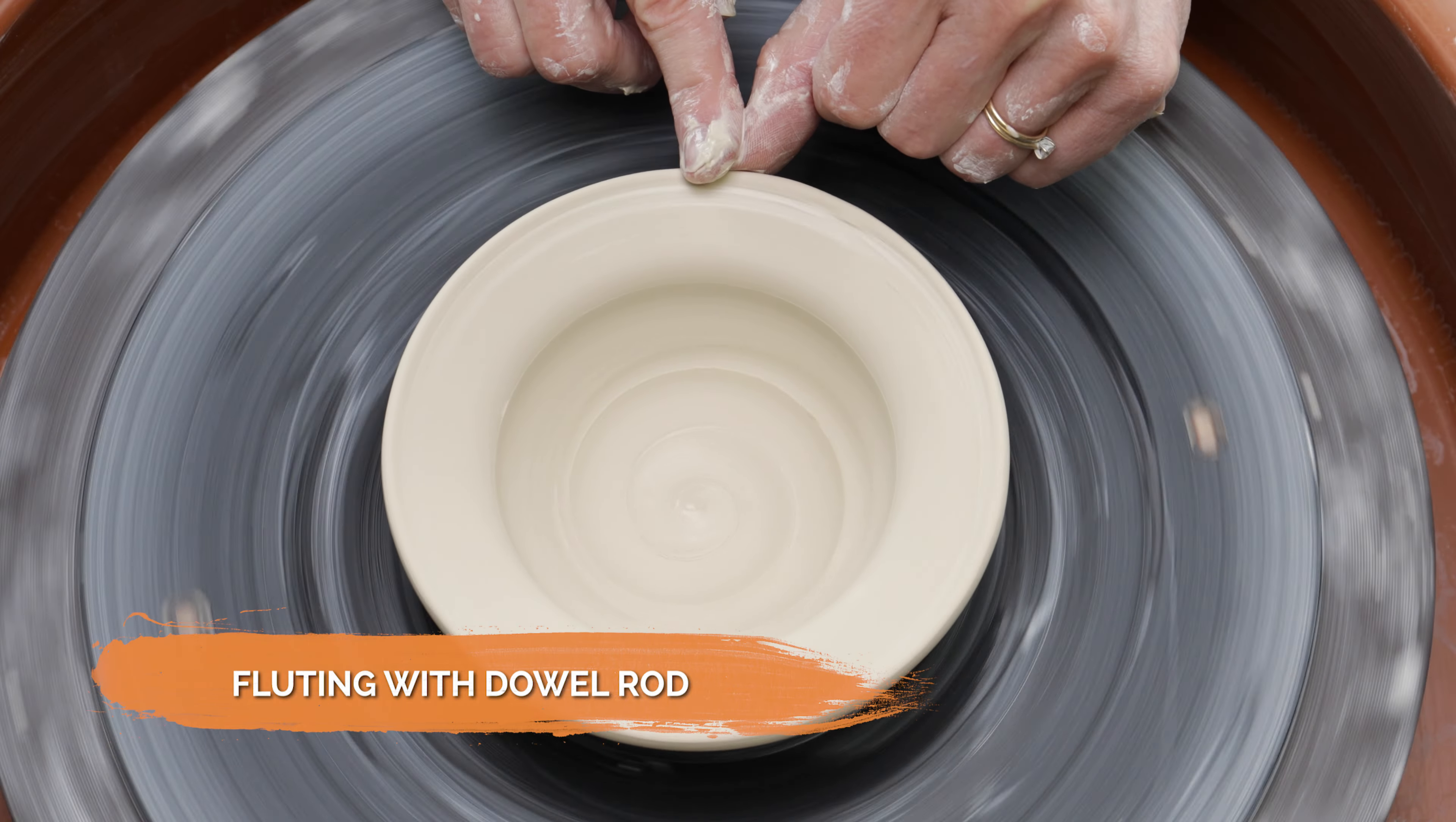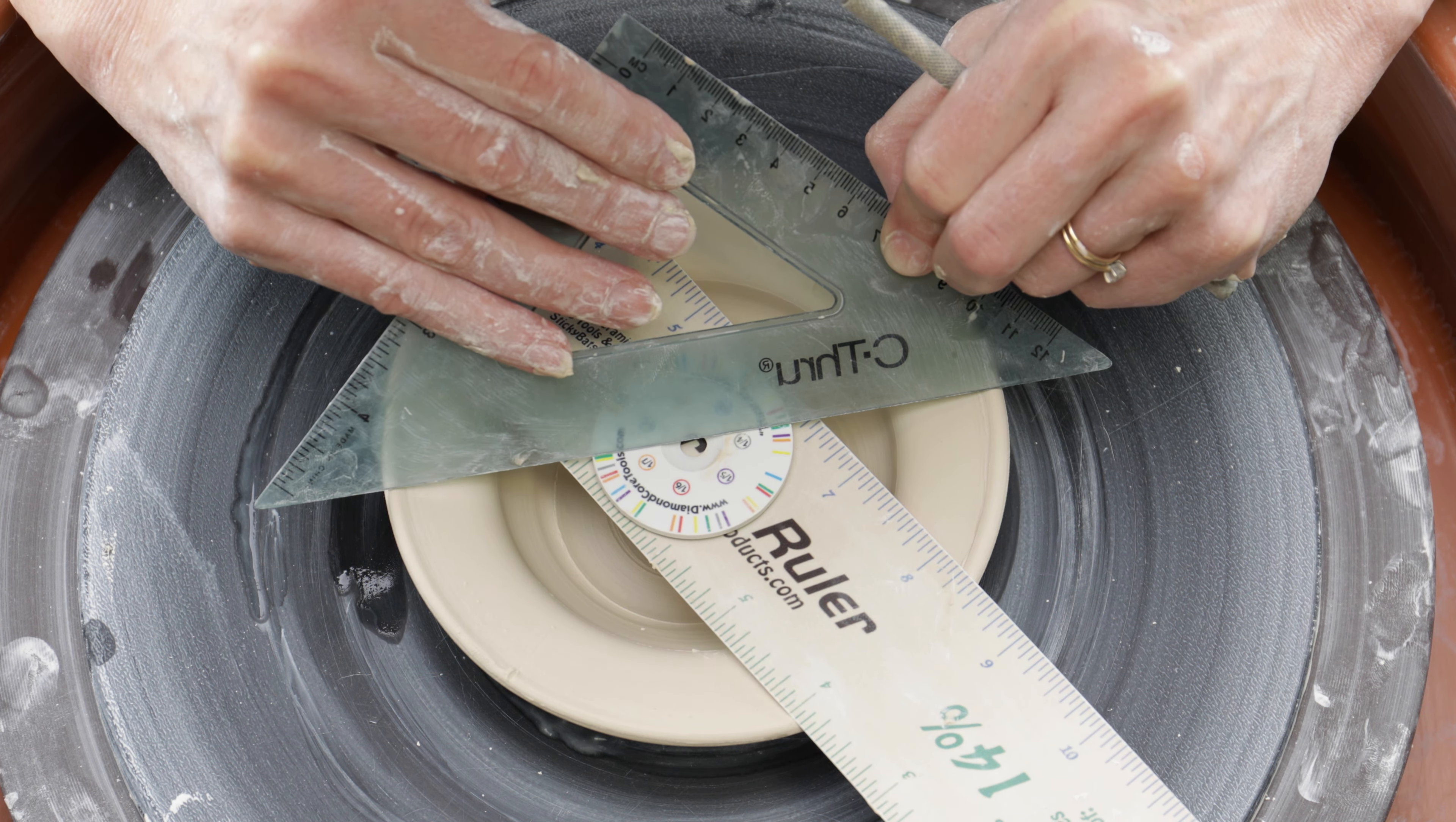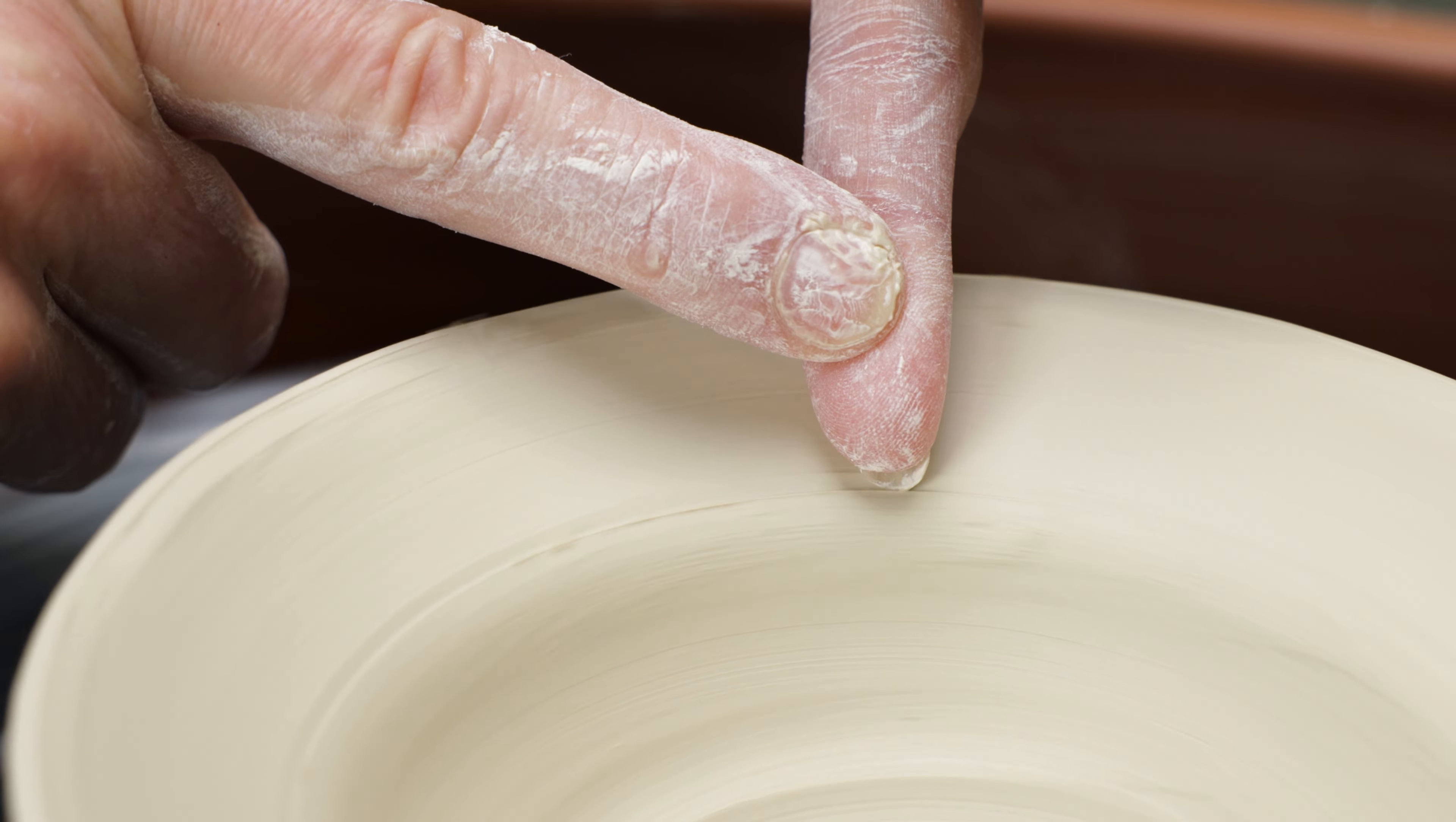Now here's another way to use your fingers along with a dowel rod. I started by throwing a bowl with a wide rim. Again, I centered the trim tool along the rim and marked the rim into eighths. I sharpened the dowel rod with a pencil sharpener. I then marked the rim along the bottom edge like this with my fingernail.